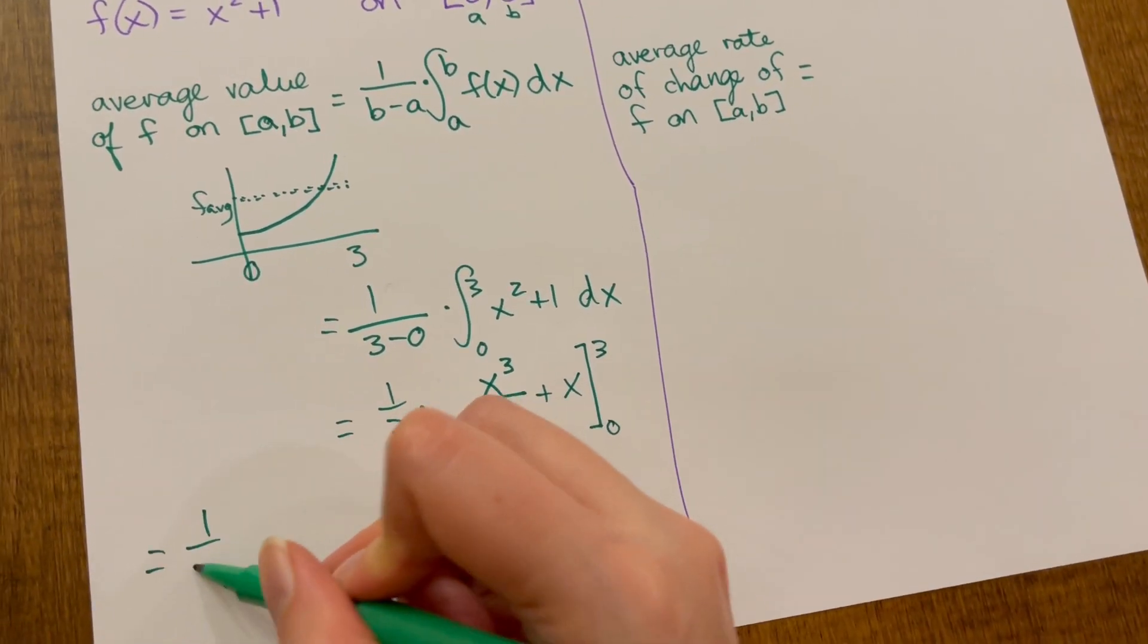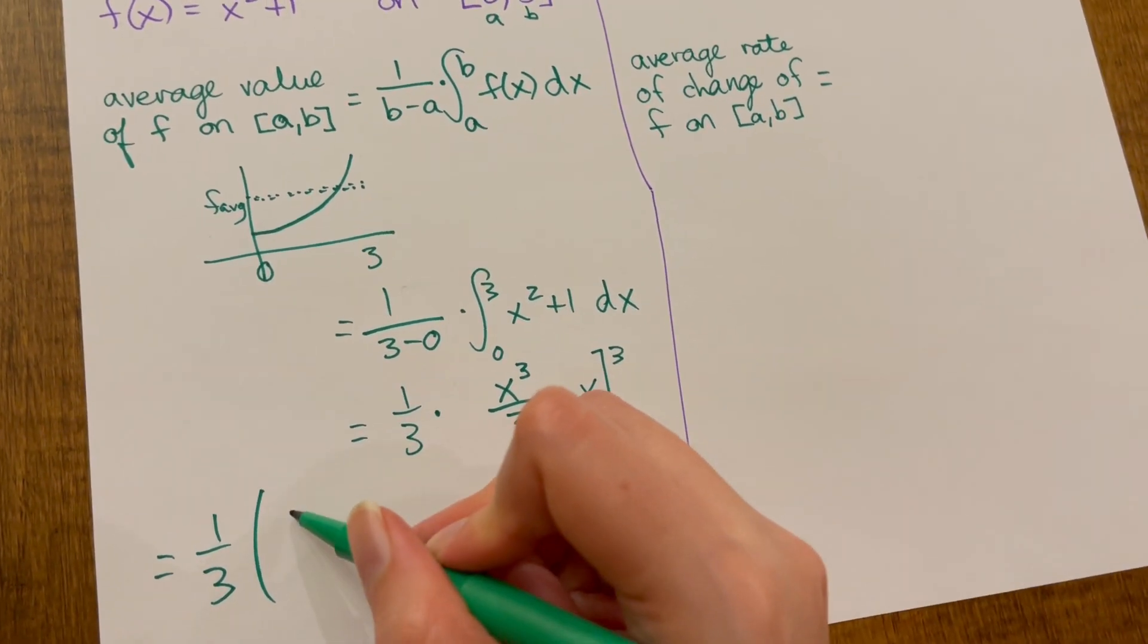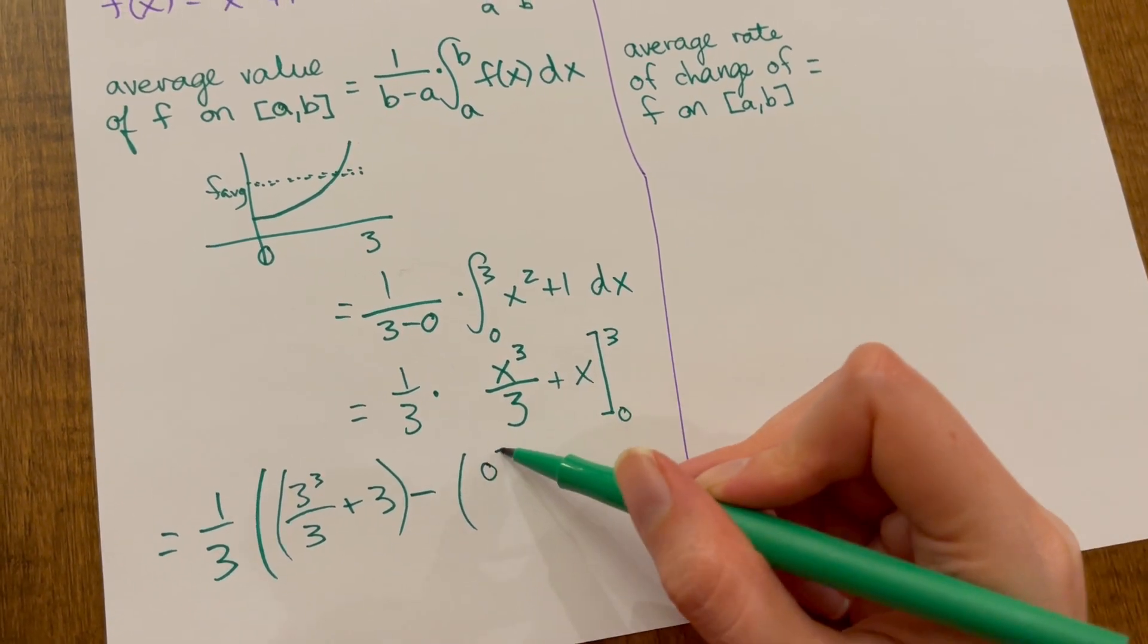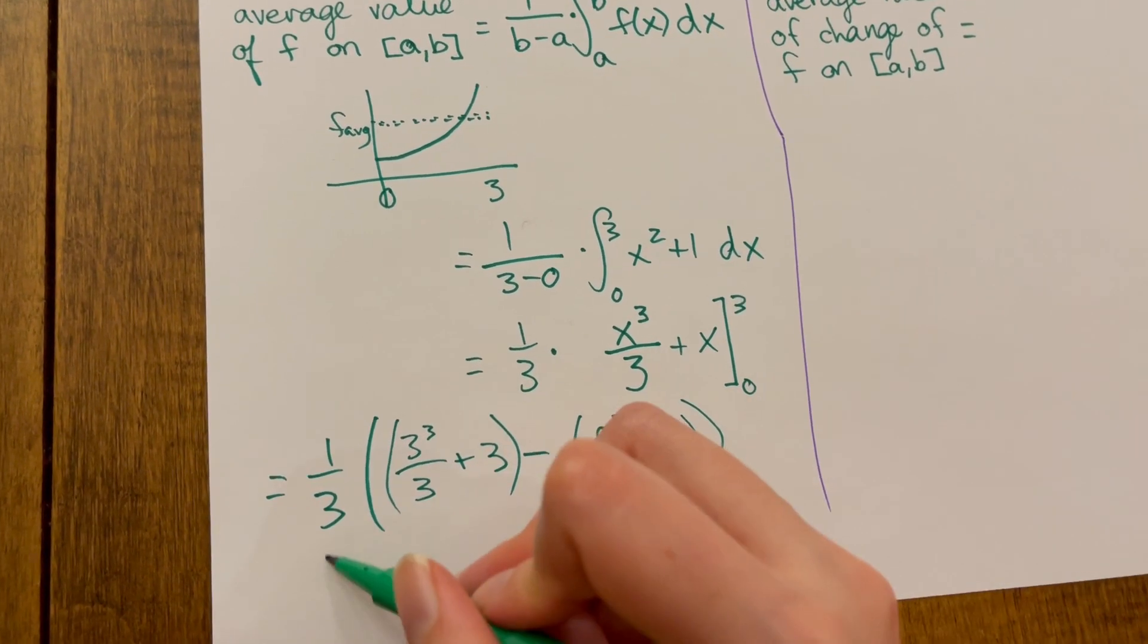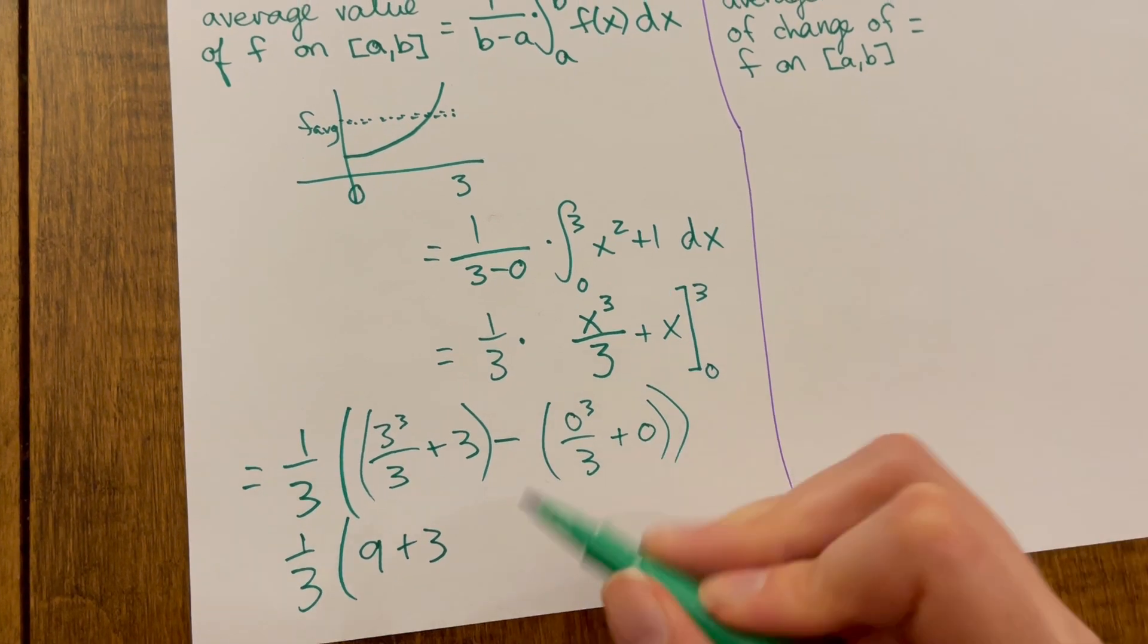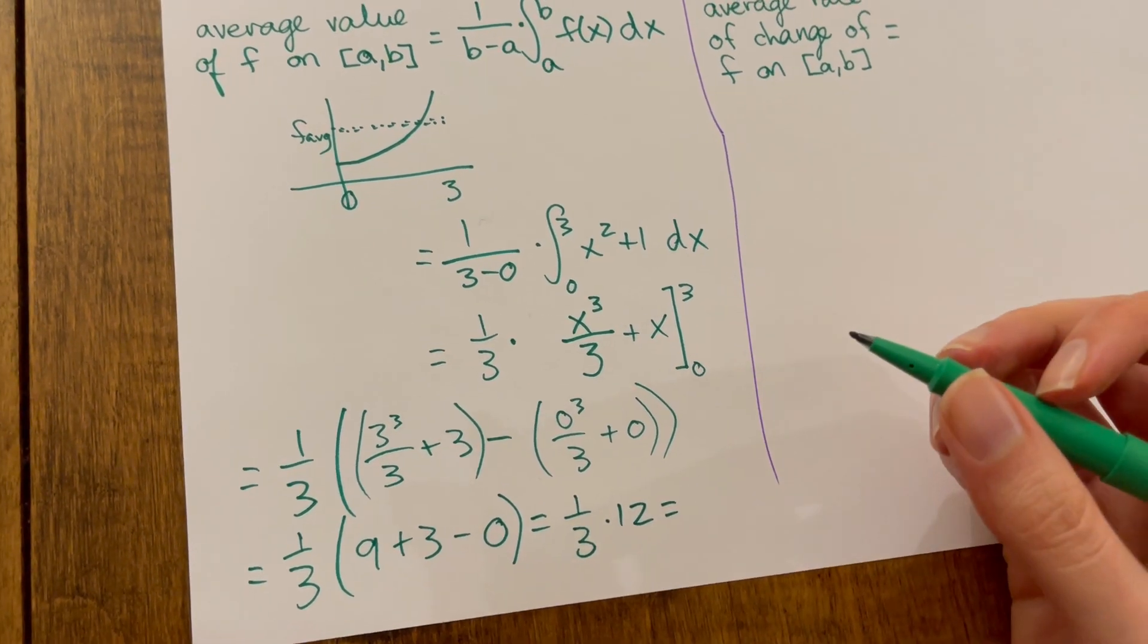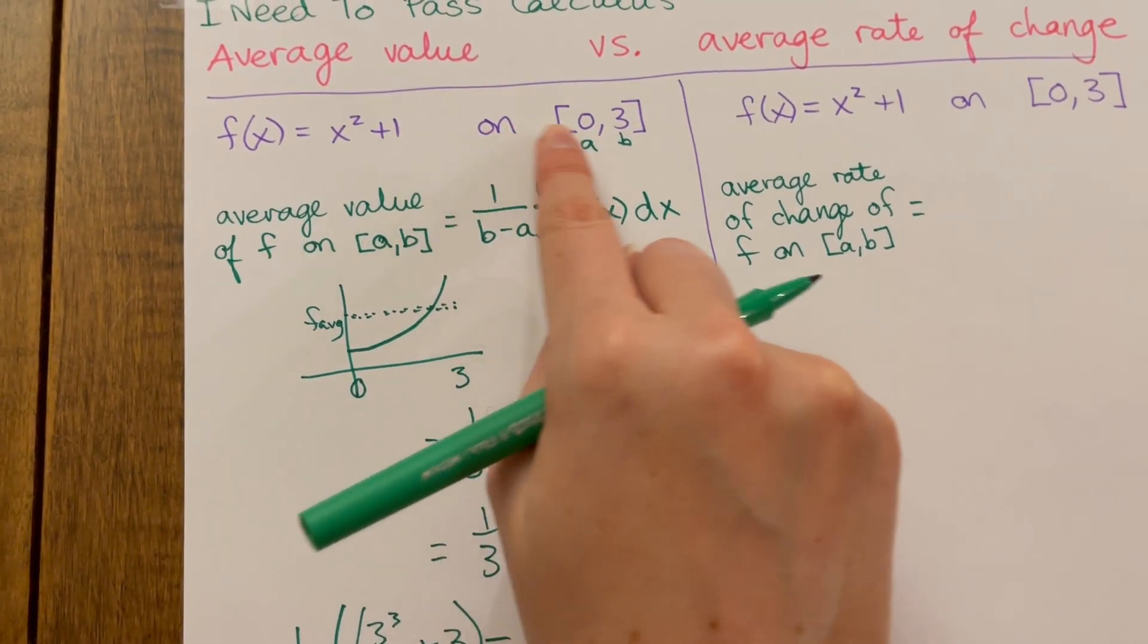Add 1 to the exponent and divide by adding 1 to the exponent plus just a number. When you take the antiderivative it's the number times the variable, so 1x, and we'll evaluate that from 0 to 3. One third times this whole thing. We plug in 3 into this antiderivative: 3 cubed over 3 plus 3, minus when we plug in 0: 0 cubed over 3 plus 0. We have 1 third times 27 over 3 is 9, then 1 third times 12. So it looks like we get 4 as our final answer. That's the average height of this parabola going from 0 to 3.